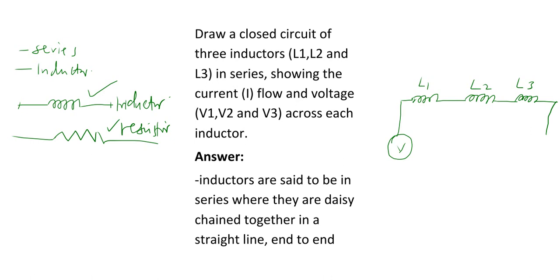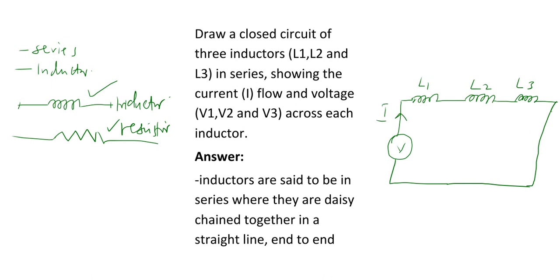So these three will be connected in series like that. Then current I will flow like that. This means that the positive and negative terminals are labeled for each inductor. The reason why we are labeling like that is because electrons flow in the opposite direction to the current. Electrons will flow in this direction, and the current will flow in this direction. So those are the three inductors.